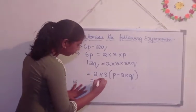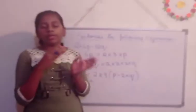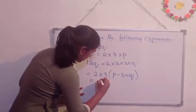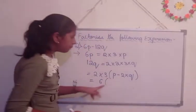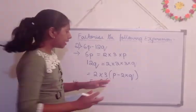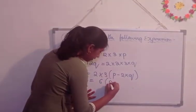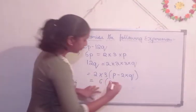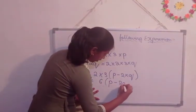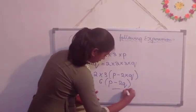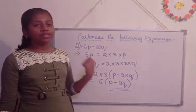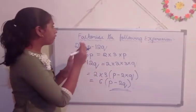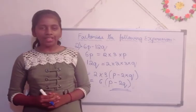So, it is equal to, we are going to multiply it. So, 2 into 3 means 6. Open bracket. p minus 2 into q means p minus, the sign we are going to write. And then 2 into q means 2q. So, this is the method how to factorize the following expression.